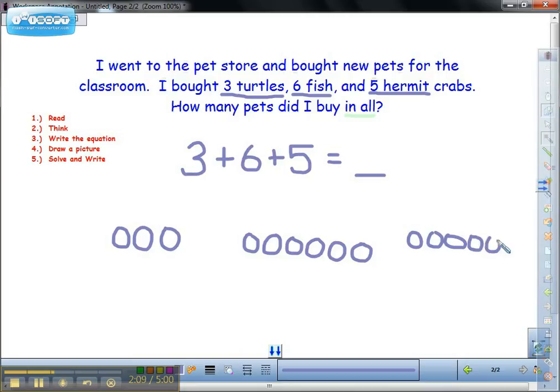So each of these groups represents an addend: the three turtles, the six fish, and the five hermit crabs. Now I'm ready to solve and write. How many pets did I buy in all?